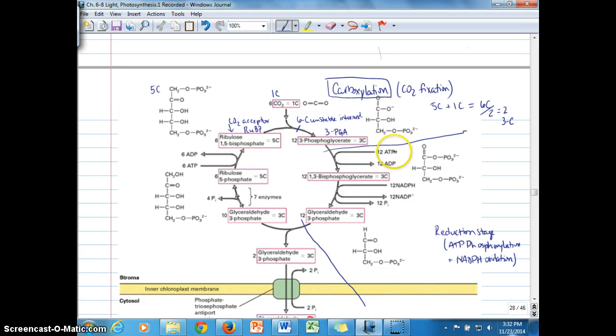3-phosphoglycerate enters the reduction stage. Here's that first step where for each 3-phosphoglycerate that enters, it is phosphorylated by one ATP. If 12 3-PGAs enter the reduction stage, then 12 ATP are consumed. By becoming phosphorylated, we're looking at 3-PGA up here, a three carbon molecule with one phosphorus group. When it gets phosphorylated by ATP, we add another phosphorus group to it. So now it becomes 1,3-bisphosphoglycerate, or 1,3-BPGA.